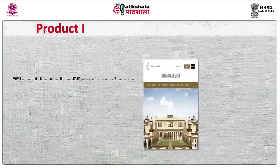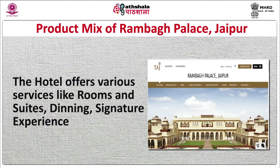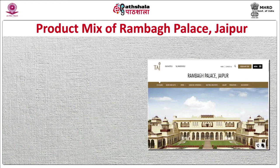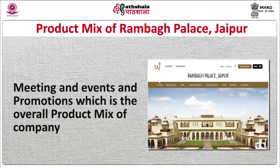The hotel offers various services like rooms and suites, dining, signature experience, meetings and events, and promotions — which is the overall product mix of the company. A company's product mix has four significant dimensions: width, length, depth, and consistency. These important dimensions are explained and illustrated in table number 1 for Thomas Cook India and table number 2 for Rambagh Palace Jaipur.